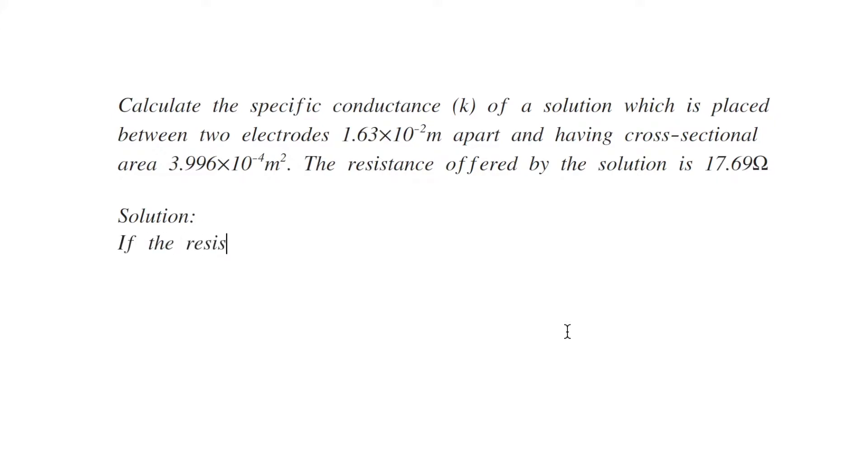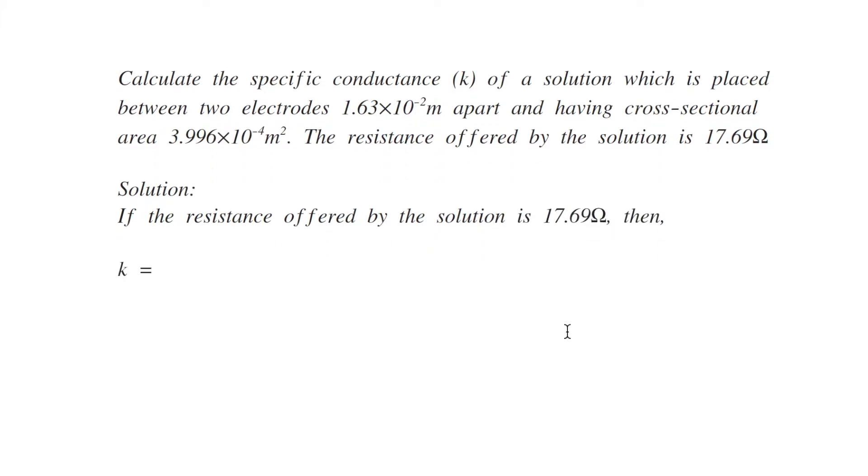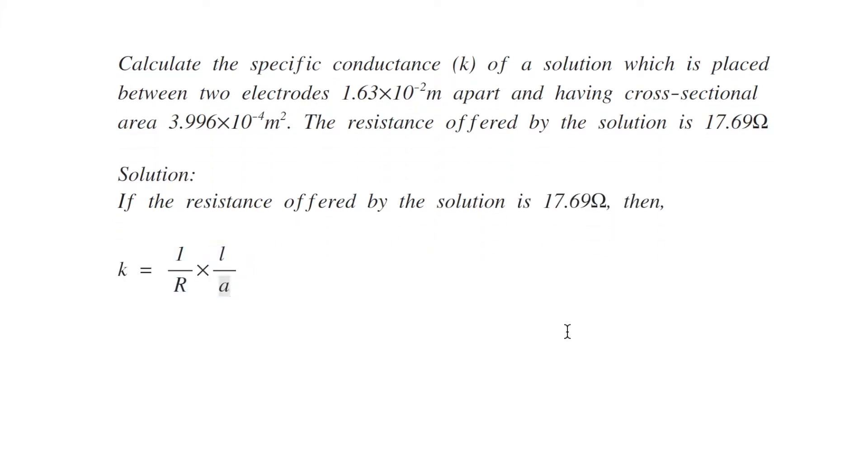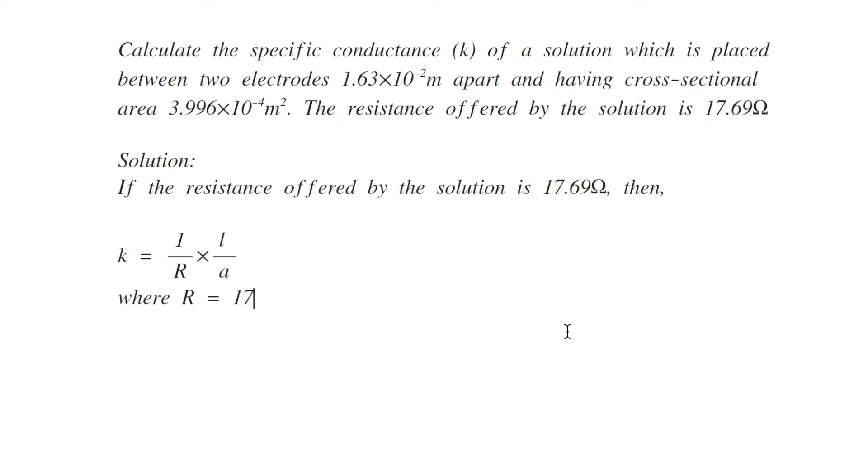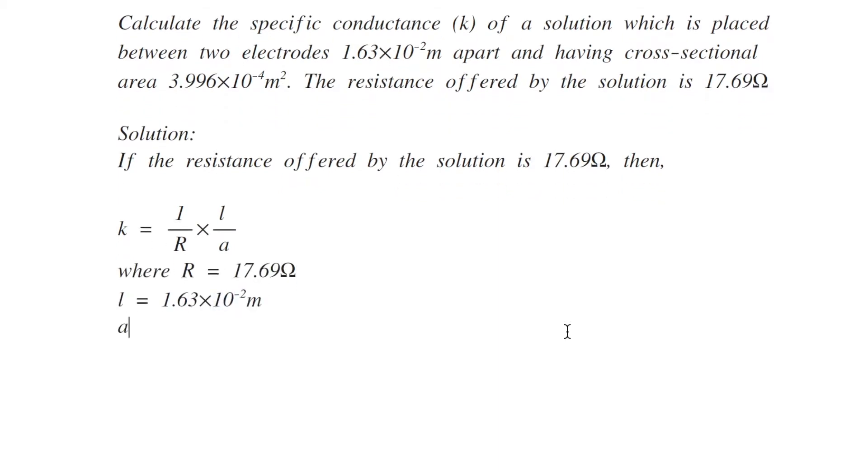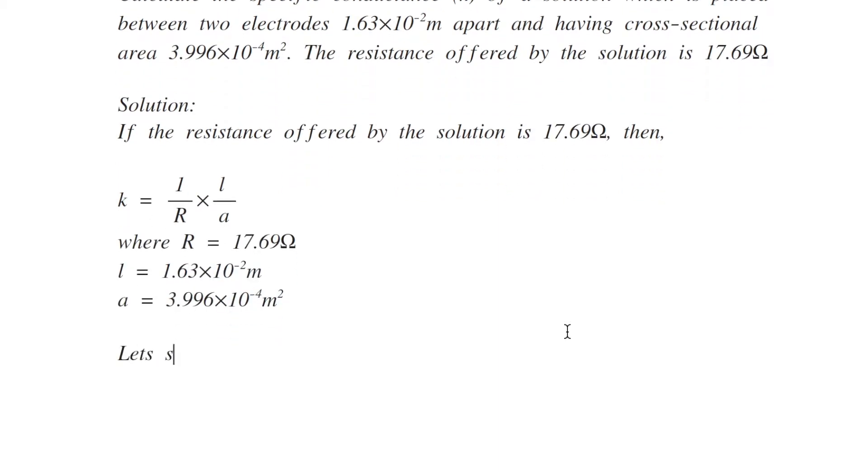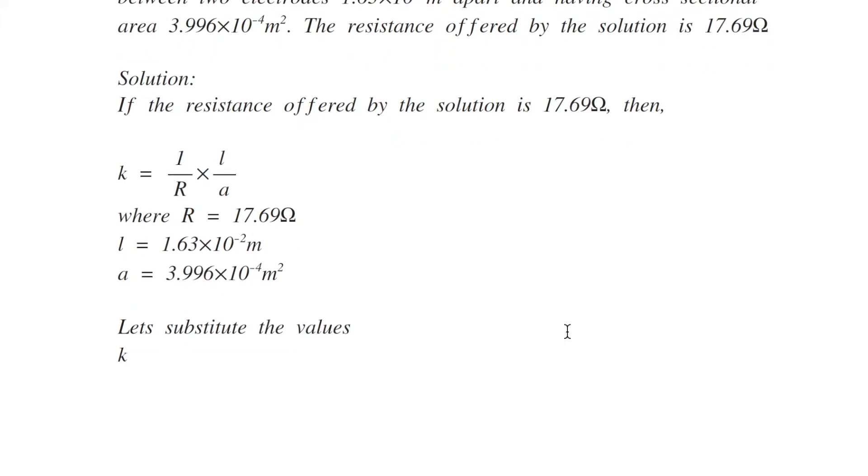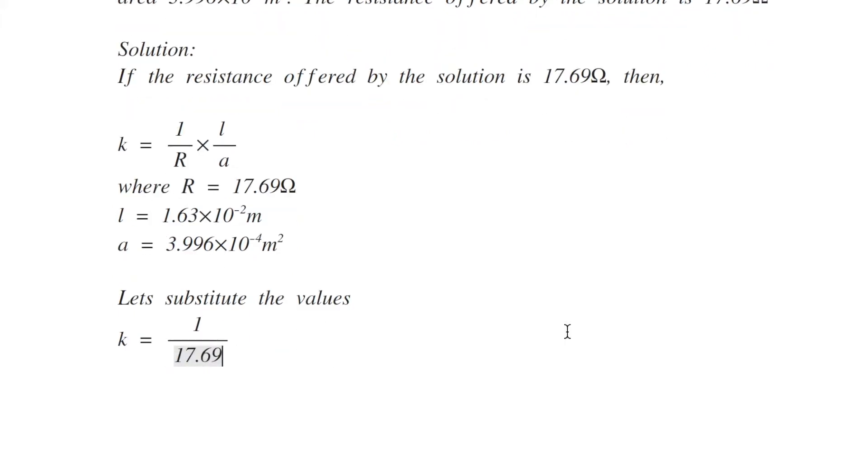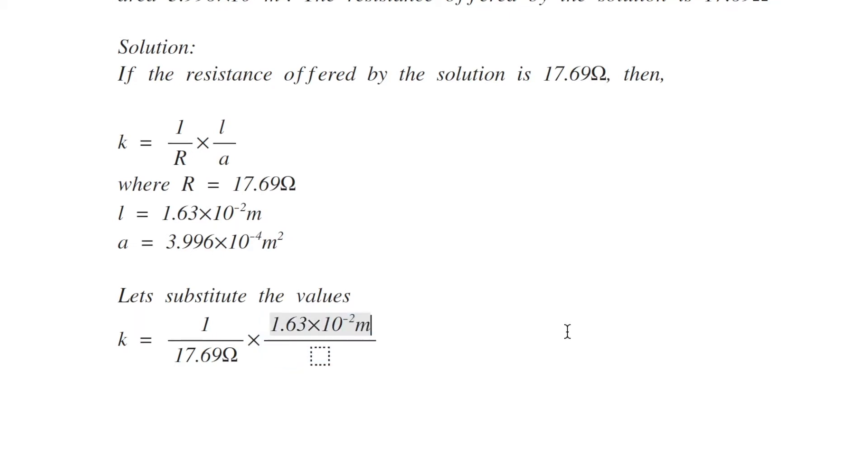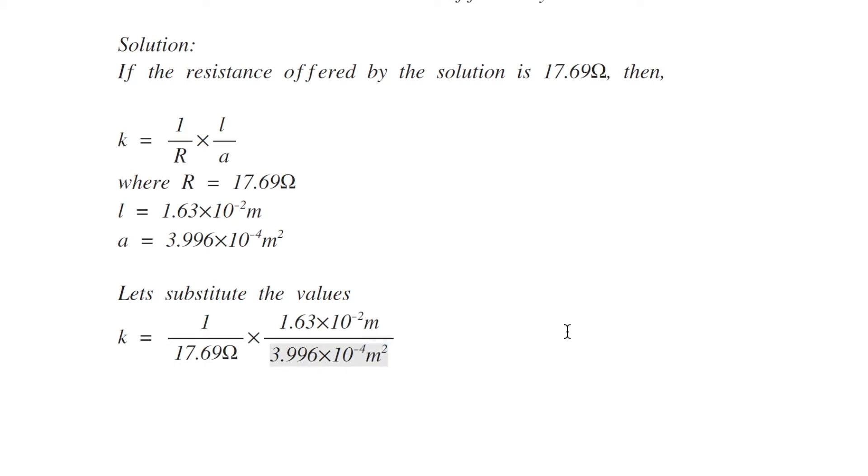If the resistance offered by the solution is 17.69 ohms then k equals 1 by r into l by a which equals 1 by 17.69 into 1.63 into 10 to the power minus 2 divided by 3.996 into 10 to the power minus 4 which equals 2.305 cms per meter.